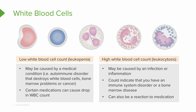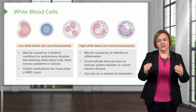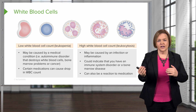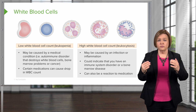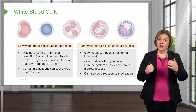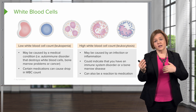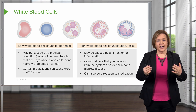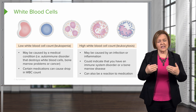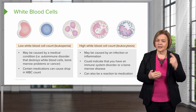Lastly, a high white cell count might also be a reaction to medication. Notice the pattern: both low and high white cell counts can be caused by immune disorders, bone marrow problems, or medications. When you see these bullet points, try to look for patterns and relationships that link them together — it'll help it make more sense and stick in your brain better.